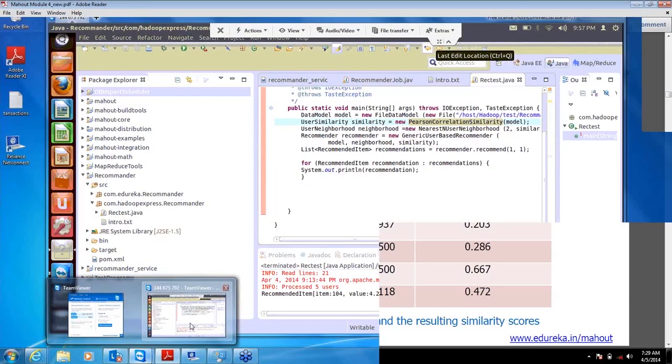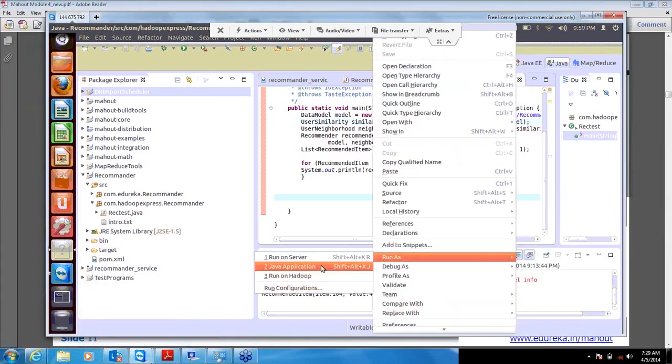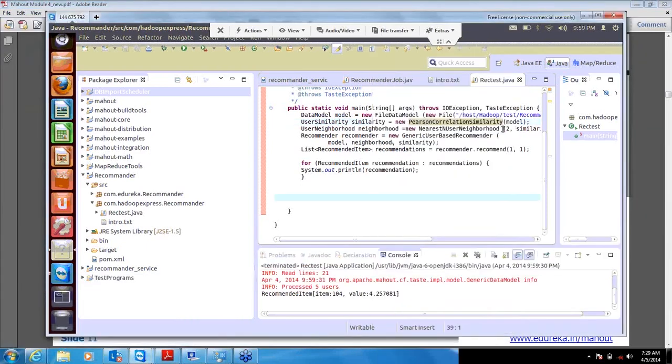As we saw last time, for user 1 it will show items and tell you what the calculated preference value could be. Now I'm going to change the similarity. Keep this in mind - we'll use this data and find it in the output.